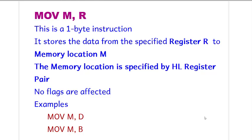Hello everyone. Welcome to the 8085 Assembly Language Programming. Today we will be doing some instructions based on memory. The first instruction is MOV M,R. This is a one byte instruction. It stores the data from the specified register R to the memory location M.